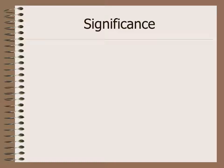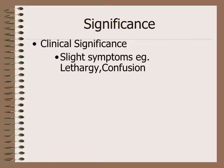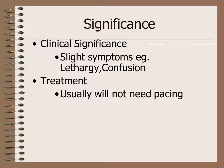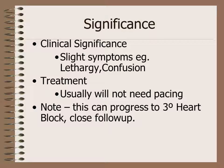The clinical significance of Mobitz type 1 Wenckebach second degree heart block: the patient is usually slightly symptomatic with some lethargy and confusion. No pacing is needed because the disease is usually in the AV node, which is typically recoverable. However, these patients should be closely followed up because this type of heart block can progress to a higher degree.